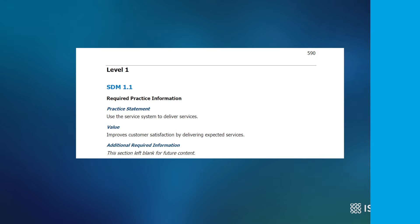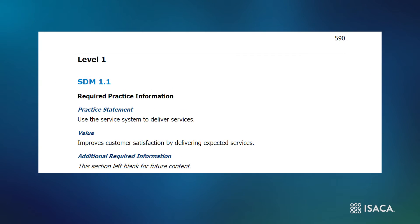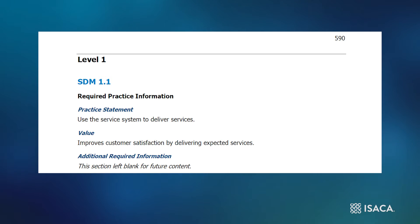Now let us look at the individual practices within the SDM practice area. We often think of the level one practices as the basics when looking at a practice area, which is the case with service delivery management. SDM 1.1 calls for organizations to deliver services using their service system in whatever form that may be. For level one, the model wants to see the delivering of services using whatever system they have available to them.